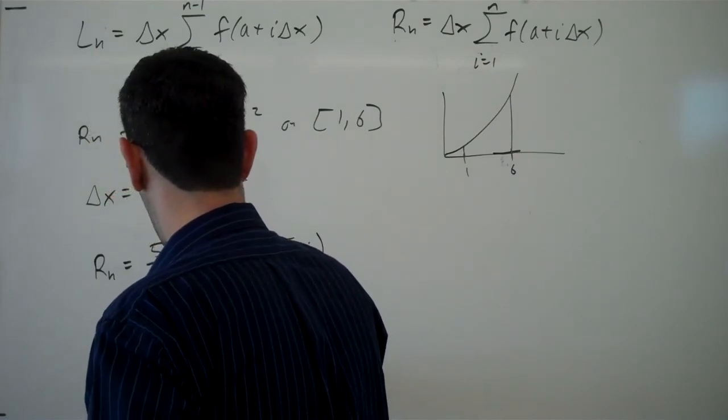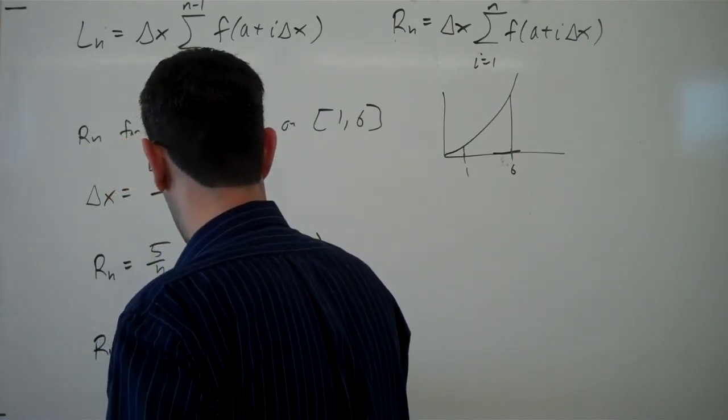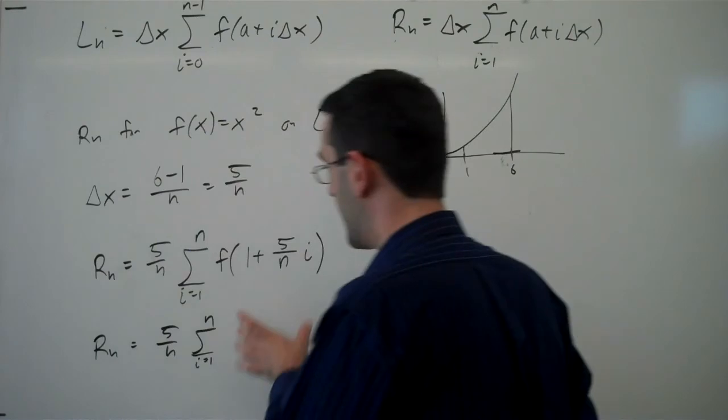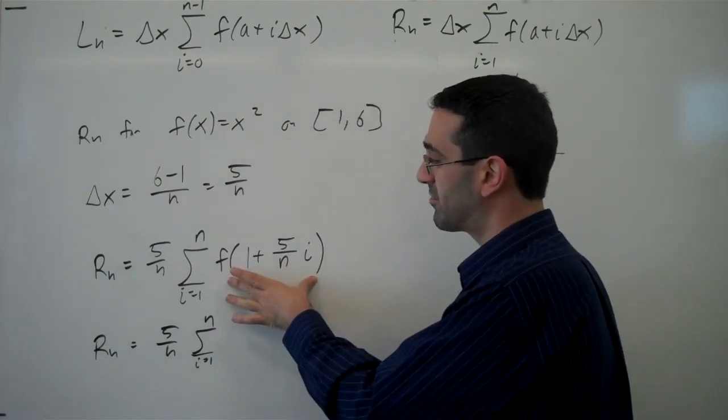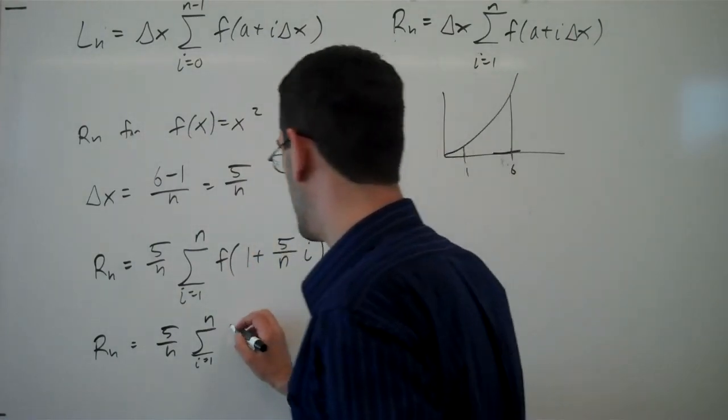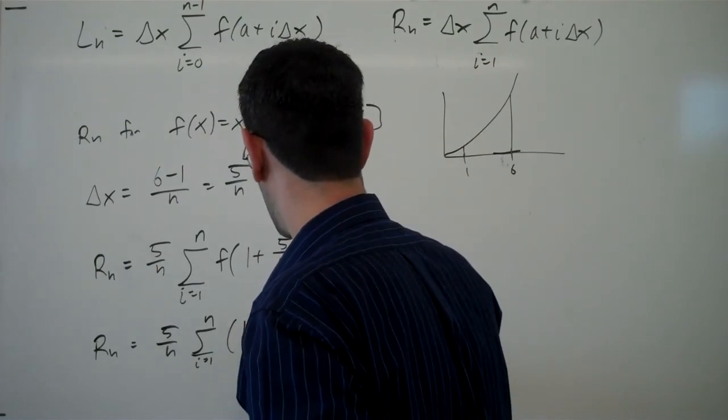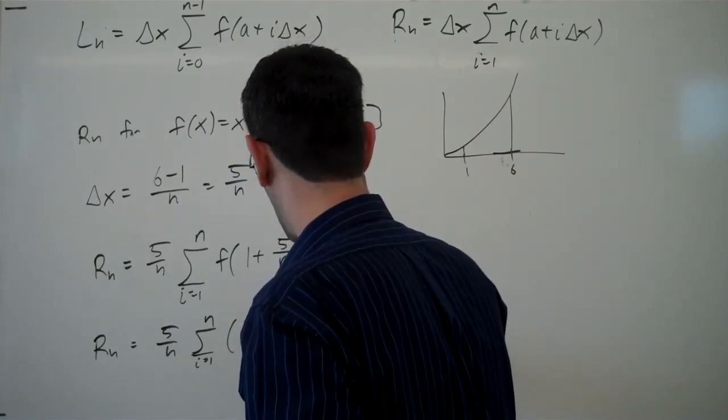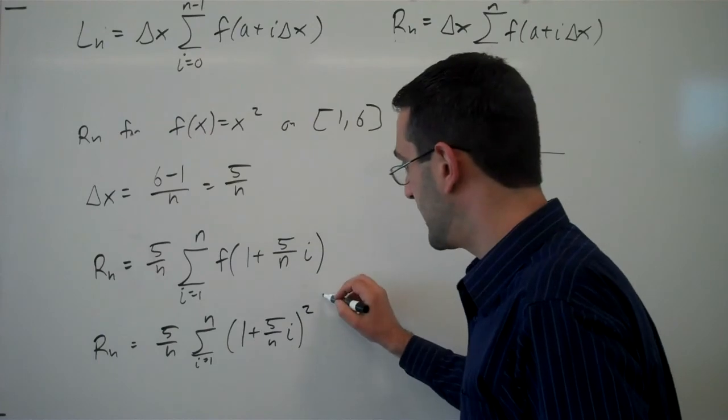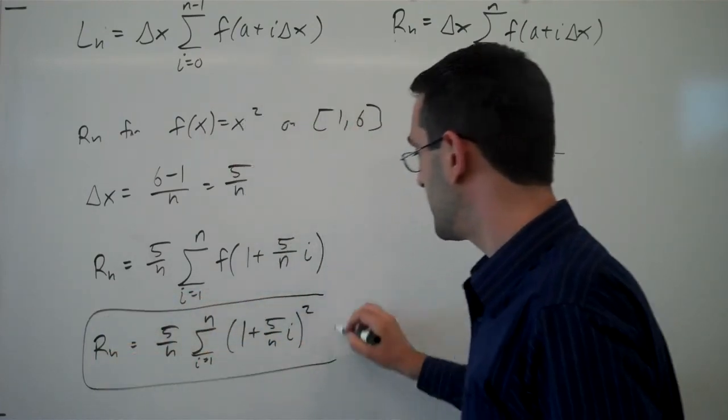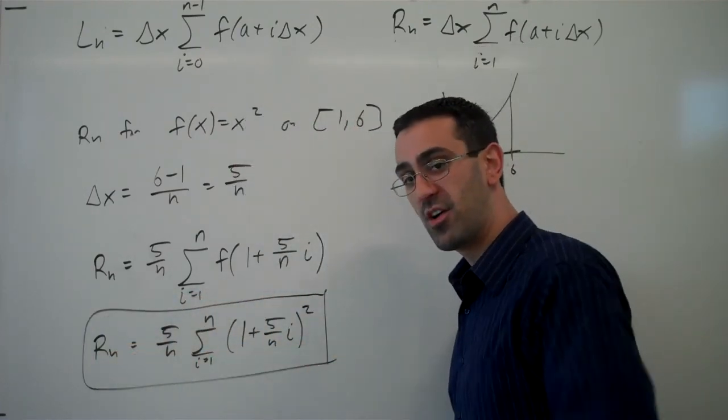So Rn will be 5 over n, sum from 1 to n. Evaluating our function, we plug this in for the input, and so that is 1 plus 5 over n, i quantity squared. And so here is a summation notation version of the Rn formula.